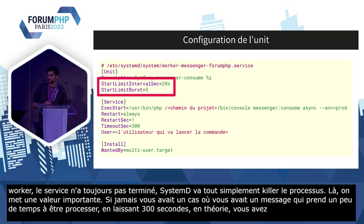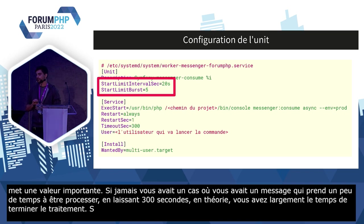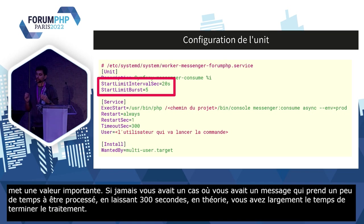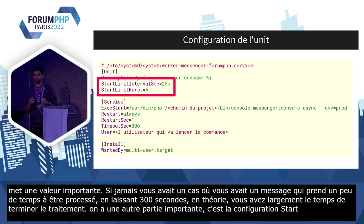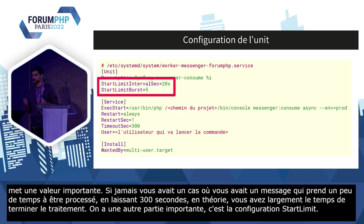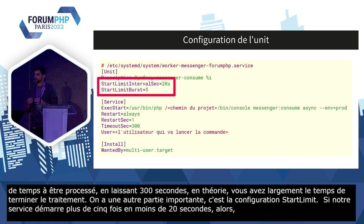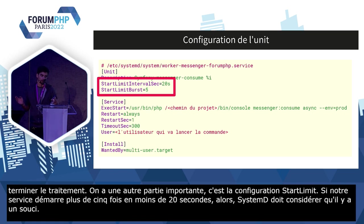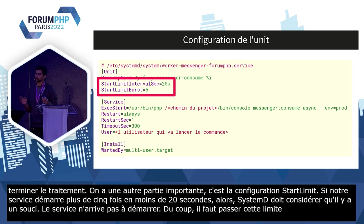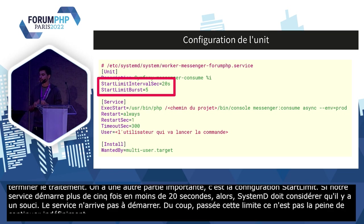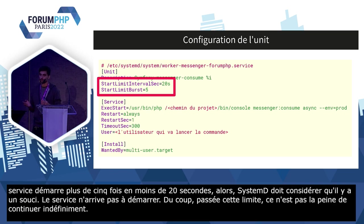On a une autre partie importante : la configuration StartLimits. Là, on va dire que si notre service démarre plus de 5 fois en moins de 20 secondes, Systemd doit considérer qu'il y a un souci. Clairement, le service n'arrête pas de crasher, donc passé cette limite, ce n'est pas la peine de continuer indéfiniment. Systemd va arrêter de redémarrer le service, c'est toujours dans l'idée de ne pas spammer alors qu'il y a un souci qui ne va pas se régler tout seul.